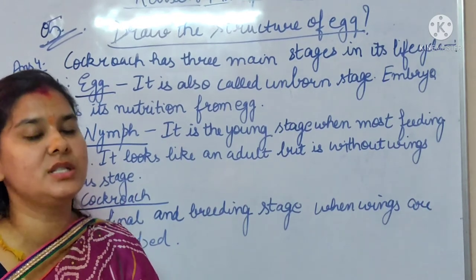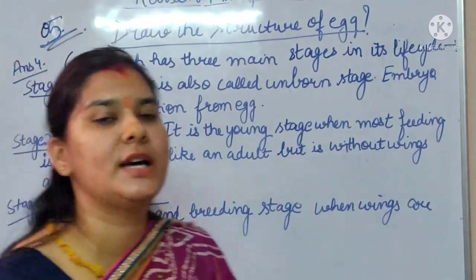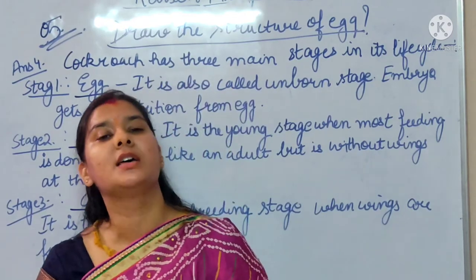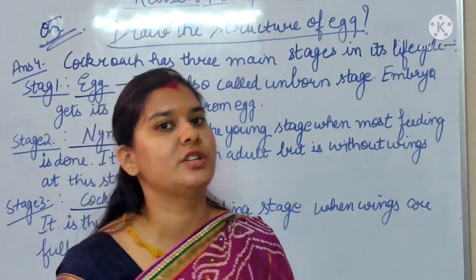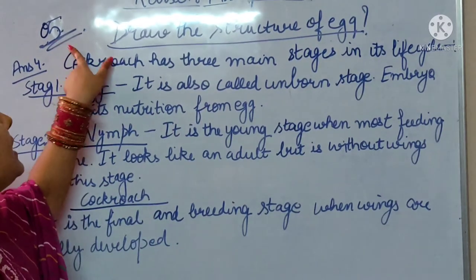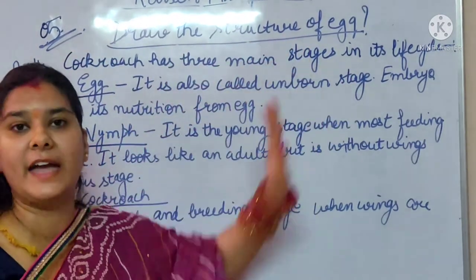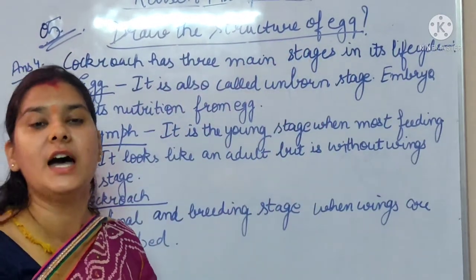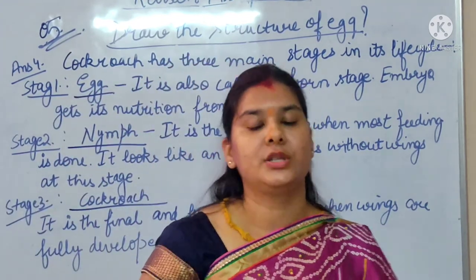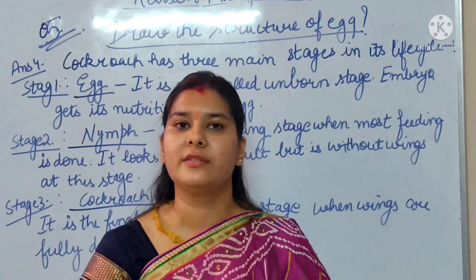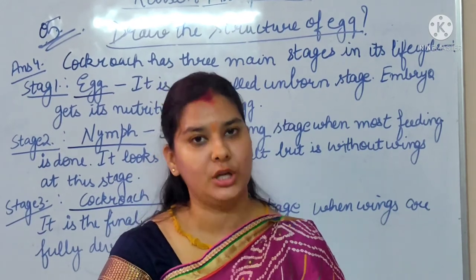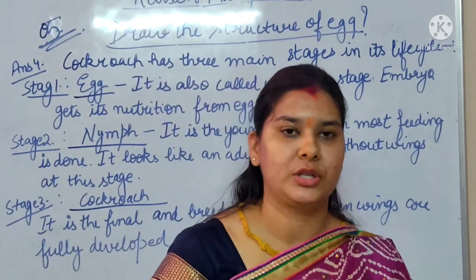So these are your 5 questions. The first question was multiple choice, the second was true or false, the third was one word answers, the fourth was to describe the life cycle of cockroach, and the fifth is to draw the structure of the egg. Complete this revision assignment in your notebook. Thank you so much for watching.